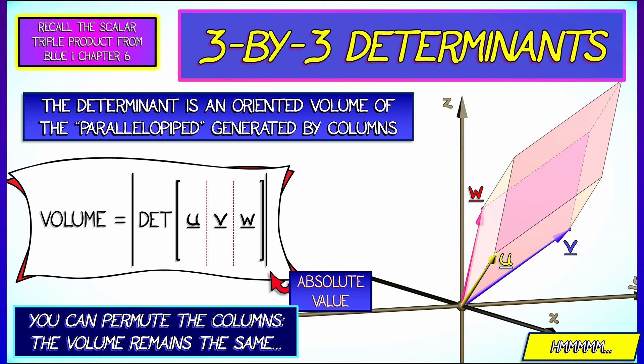And this geometric interpretation is great. It means you can permute the columns without changing the determinant in absolute value. Why is that? It's because the volume of the parallelopiped doesn't change. And that is worth thinking about.